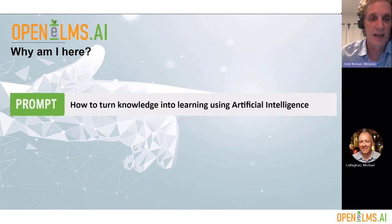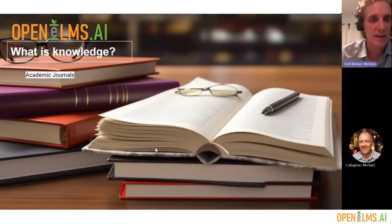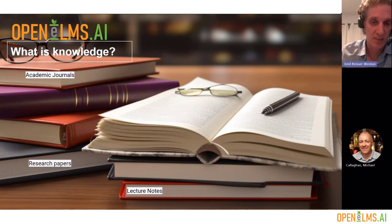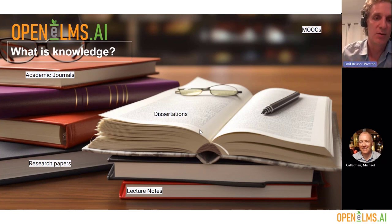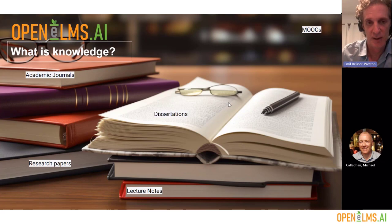So let's answer the question: how to turn knowledge into learning using artificial intelligence. Knowledge is any learning, any content that comes out of an academic institution — academic journals, lecture notes, research papers, dictations, and content from MOOCs. It's really anything coming out of a university or educational establishment, any knowledge-based research that you can turn into information to seed an artificial intelligence.